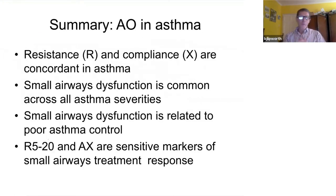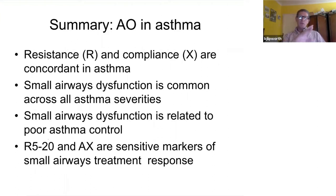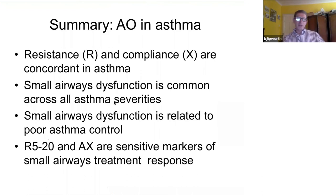Let's tie that up before we move on to COPD. What we've shown so far is that resistance and compliance are concordant in asthma — they go in the same direction, so when resistance falls, compliance increases as well. Small airways dysfunction is common across all asthma severities — not only in severe asthma but also in mild to moderate — and is related to poor asthma control in terms of steroid use, salbutamol consumption, and the Asthma Control Questionnaire.